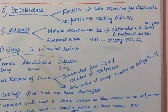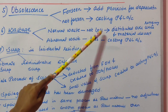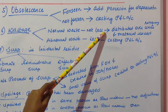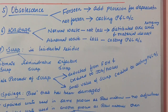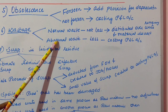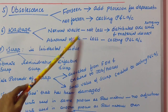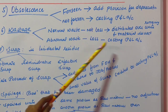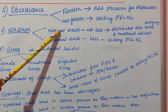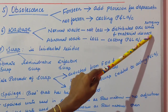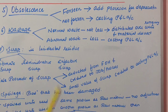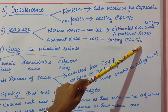Normal waste, being unavoidable, is not considered a loss. Instead it is treated as a cost in cost accounting and distributed over the remaining units and materials in the form of increased price. Abnormal waste arises due to abnormal reasons such as accidents, fire, or theft — which can be avoided — and is a loss to the company, posted to the Costing P&L account.